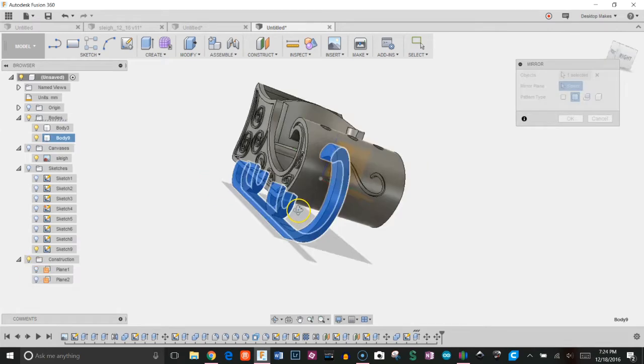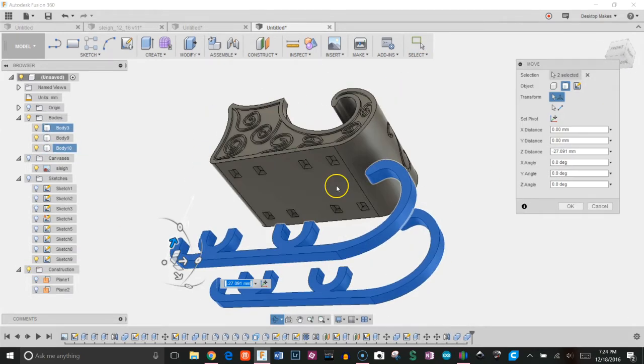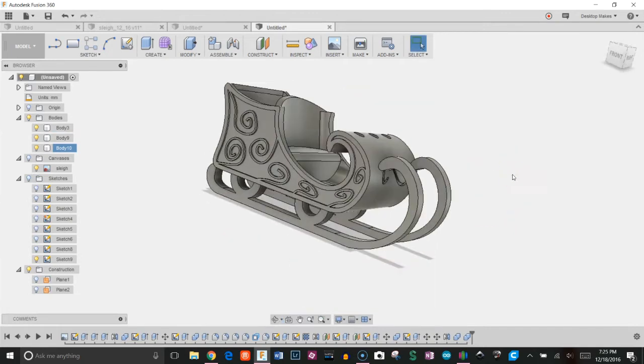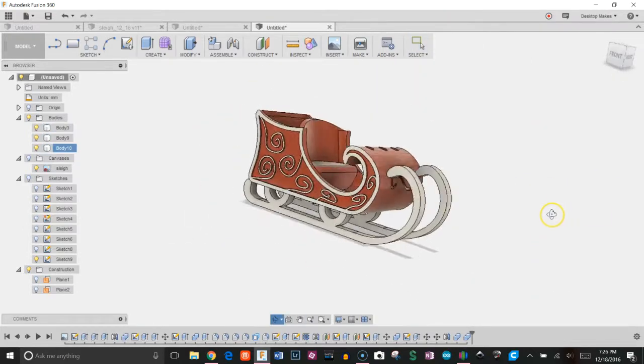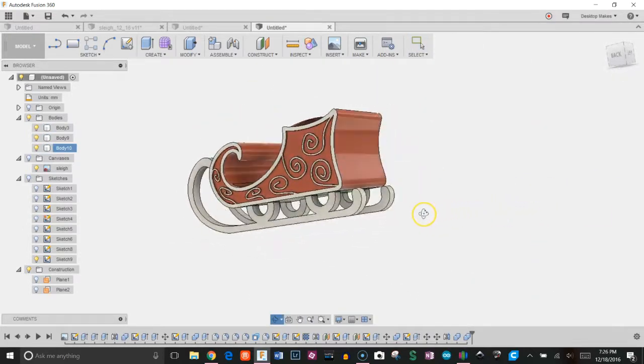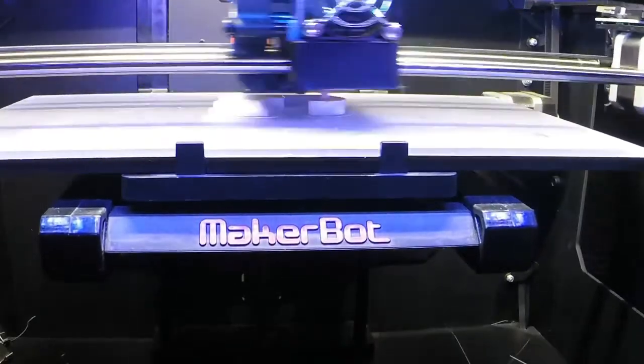I modeled one and then mirrored it on the other side. I don't show it here, but I actually go in and offset the cuts there about 0.2 millimeters so that I get a nice friction fit. That's about it. Here's the finished sleigh—I applied some color and it came out pretty nice. Next, on to the 3D printer.